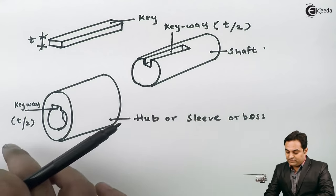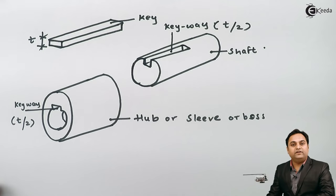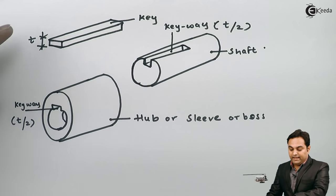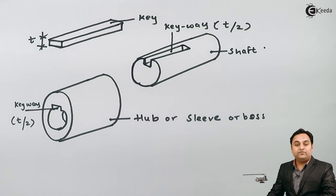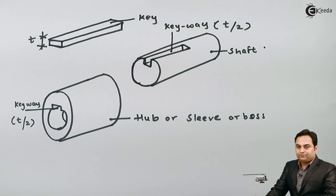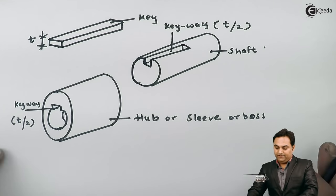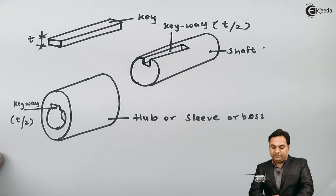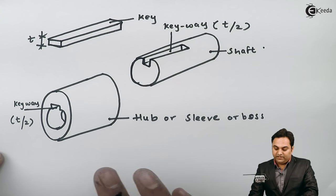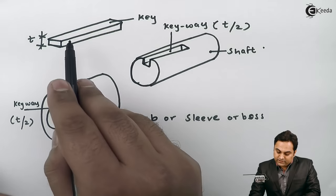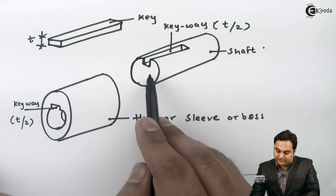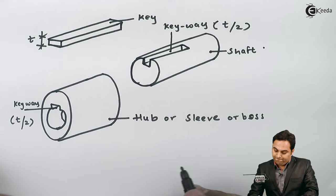The shaft is inserted inside the boss and then we insert the key, which forms a complete connection. With that complete connection, the key has connected the shaft and the hub.